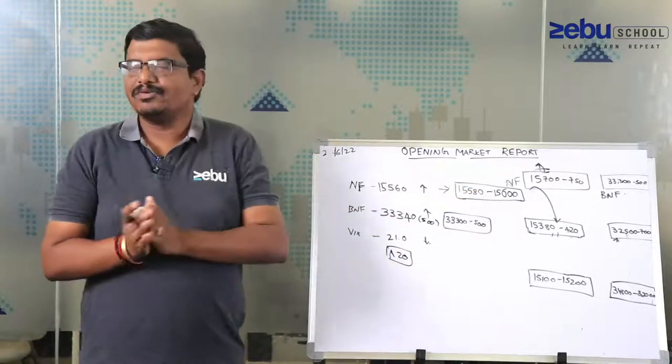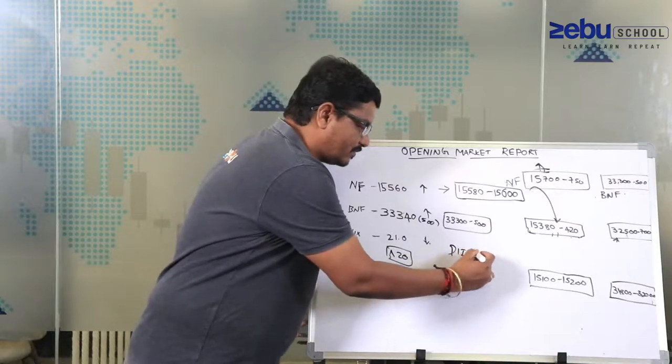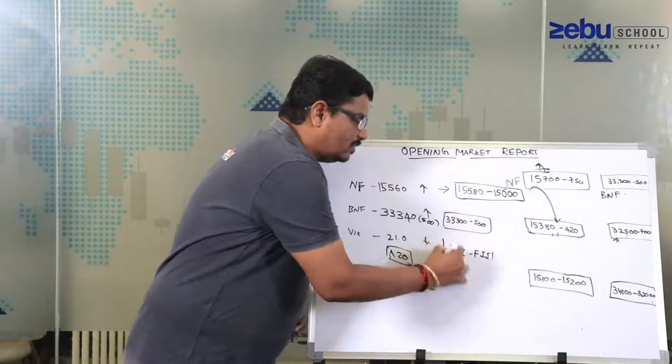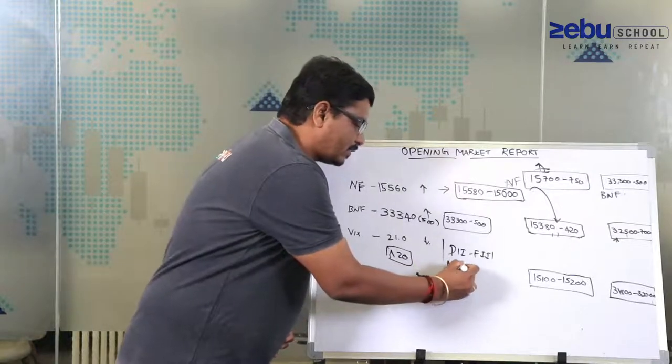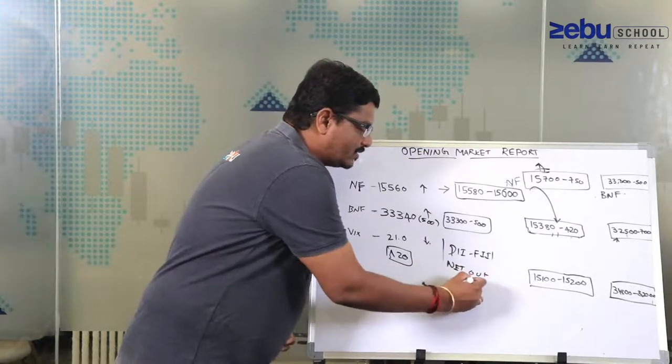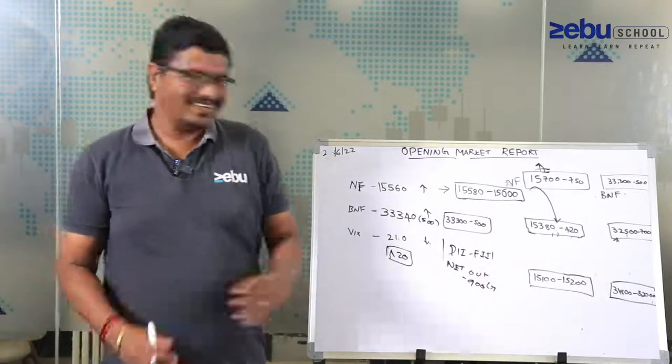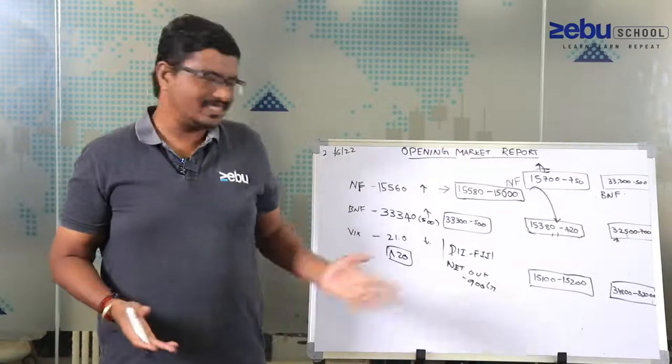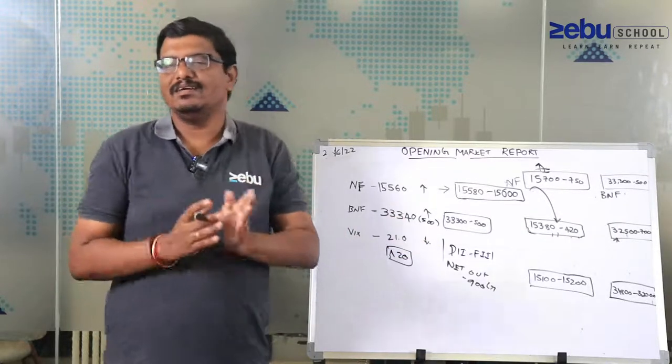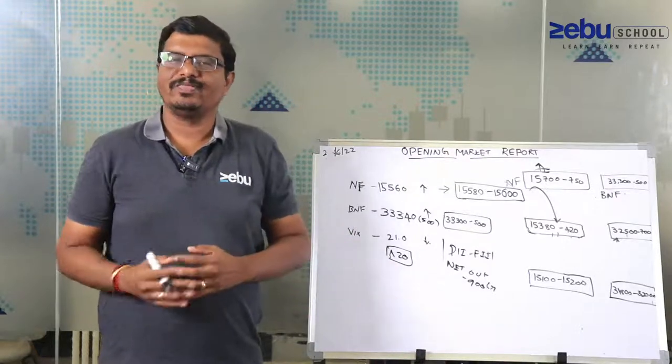Before that, if you look at DII and FII numbers, generally what we see as a modulus seems to be a net out, roughly 900 crore. Looking at all these numbers and today's gap up opening, I'm not sure what is happening because even two days back when it was 800 crore inflow, the very next day market gapped down.